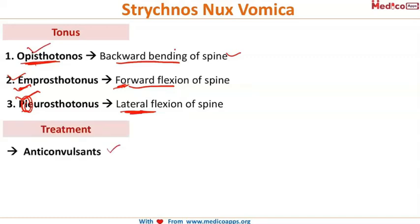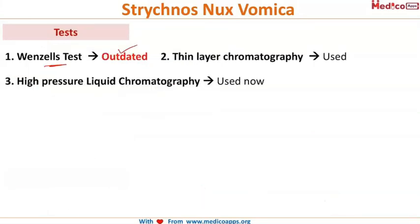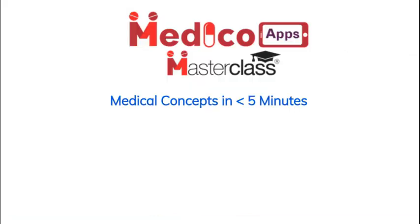Treatment is obviously anticonvulsants. To confirm the poisoning, the sample used for testing is urine, as 20% of nux-vomica is excreted unchanged in urine. Important tests include Wenzel's test, though it is now outdated. The currently used tests are thin layer chromatography and high pressure liquid chromatography.